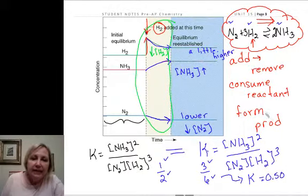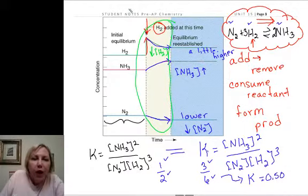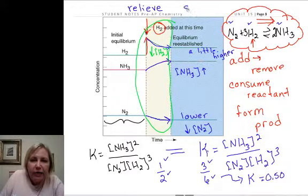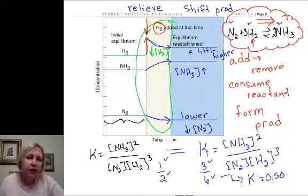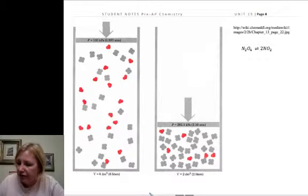So what we would say, the answer to this question is always going to be, what will happen to relieve the stress? And in this case, we're going to say, we shift to form product. Some books will say shift right and shift left. I have kind of a pet peeve about that. That bugs me, so I won't use that phrase.